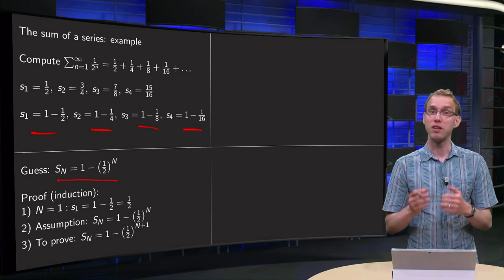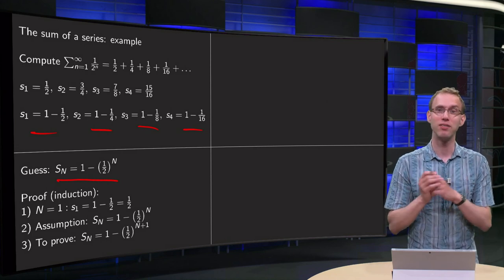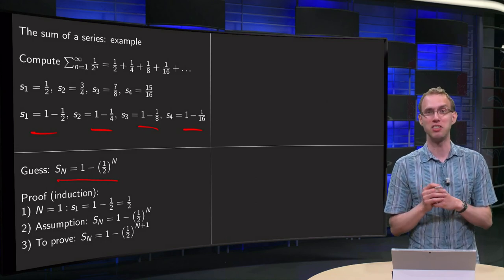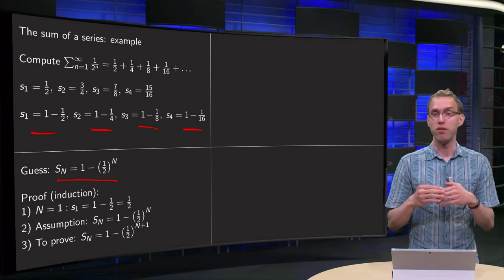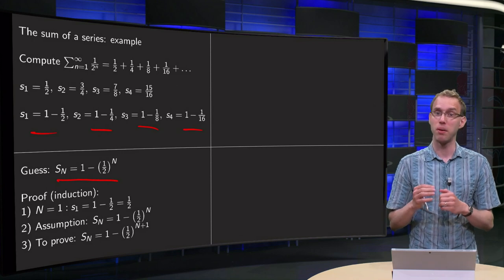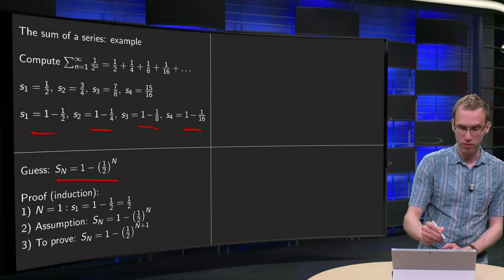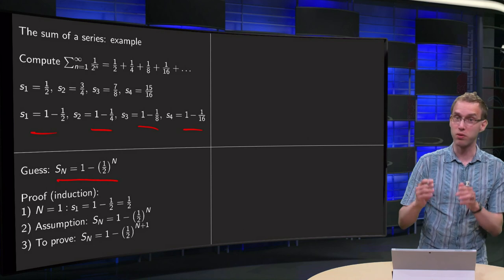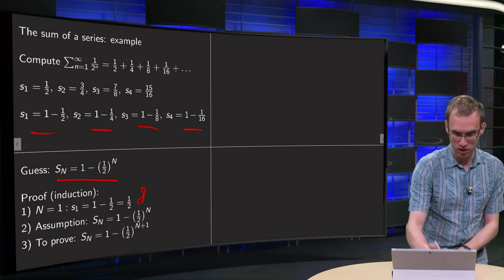So how can we in fact prove that our guess is correct? For that we can use induction — it is a nice small example of an induction proof. If you want to use induction, first you have to prove that the expression is correct for N equals 1. For N equals 1, we have s1 equals 1 minus (1/2) to the power 1, which equals 1/2. That is ok.